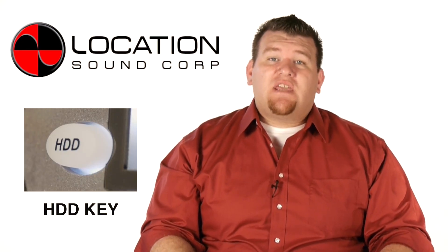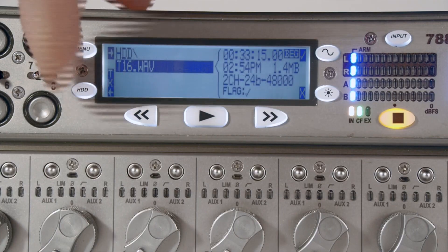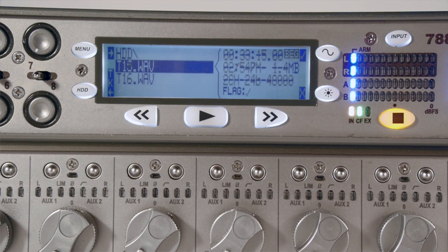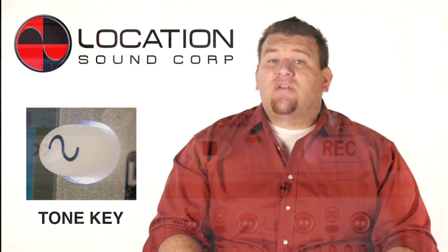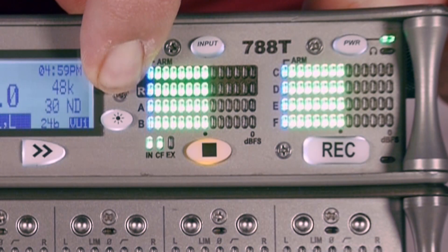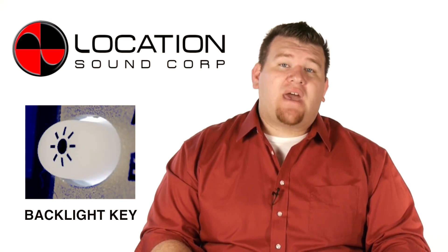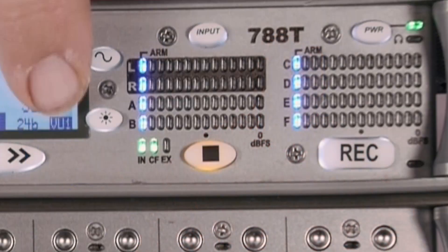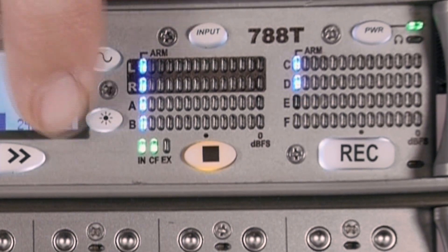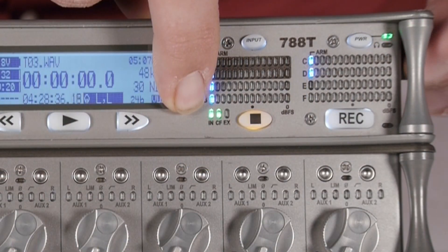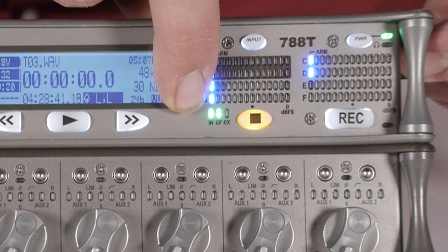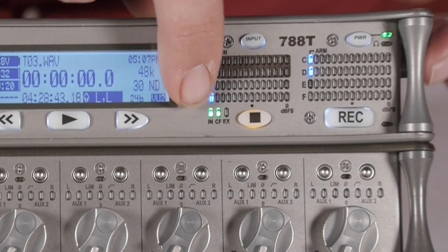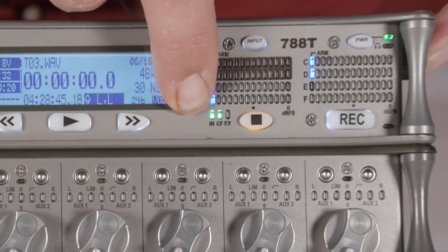The HDD key enters a take list and drive directory. You could view folders and file properties and select files for playback. The tone key activates the tone oscillator and will latch on when holding button for more than two seconds. The backlight key switches back and forth from view 1 to view 2 level meters, allowing you to monitor additional tracks. If you press and hold the backlight key while turning the multi-function rotary knob, you can adjust the brightness of the LEDs or turn on or off the backlight.